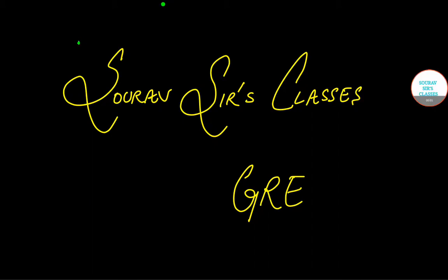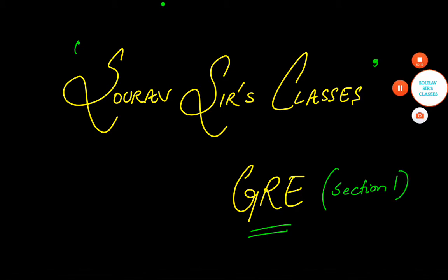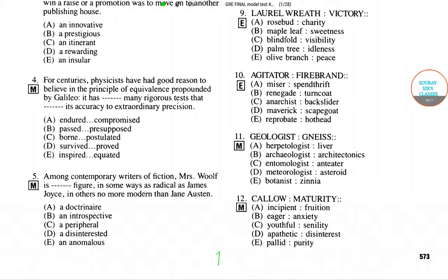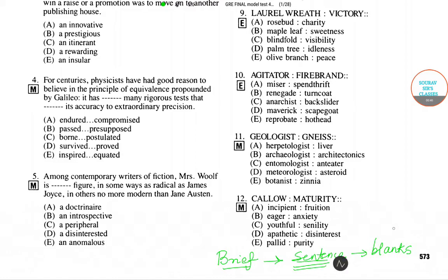Hello and a very warm welcome to Sorosers Classes. Today's tutorial will be on GRE — we will focus on Section 1. Let me tell you briefly what we are going to do: we will be given a sentence that may contain one or more blanks, and a group of five options. Given the requirement of the sentence, we need to pick one of the options and give the reason why. We will start today's tutorial with question number five.